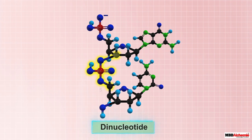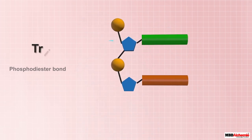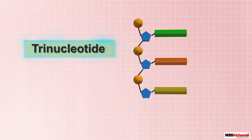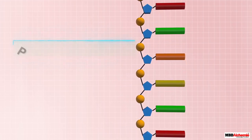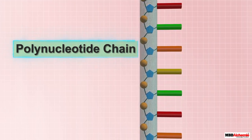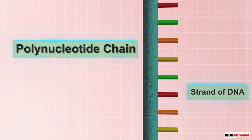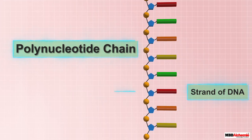The linkage between the third carbon of the pentose of one nucleotide and the fifth carbon of the pentose of the other nucleotide through a phosphate group is called a phosphodiester bond. By forming similar phosphodiester bonds, more nucleotides add on, forming a trinucleotide, then tetranucleotide, and so on, gradually building a long polynucleotide chain, also called a strand of DNA.